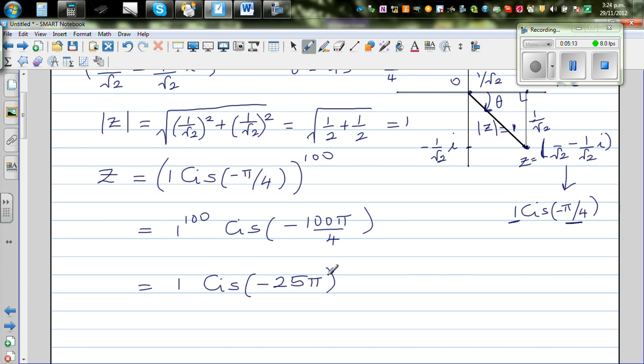This represents minus 24 rotations. One rotation or revolution is 2 pi, or one full circle is 2 pi. So 12 revolutions is 24 pi. So this is 24 and a half rotations.